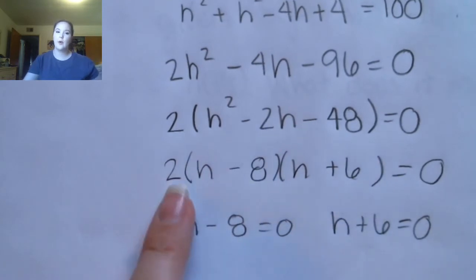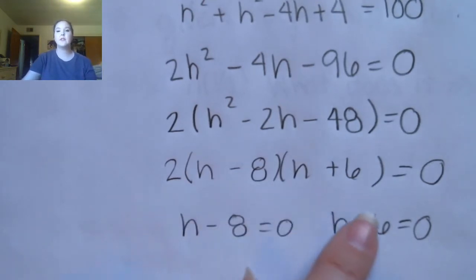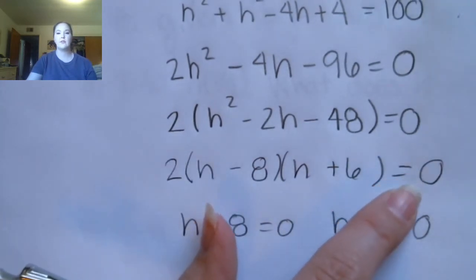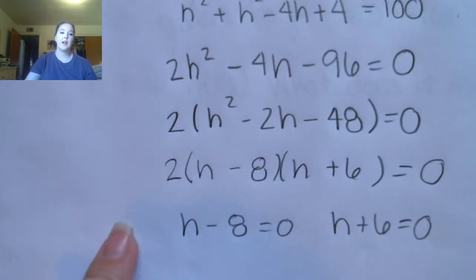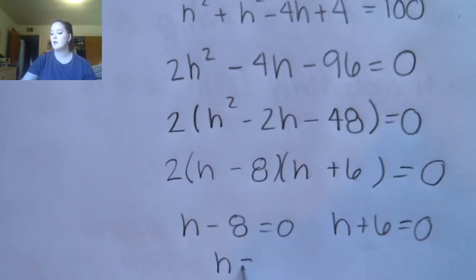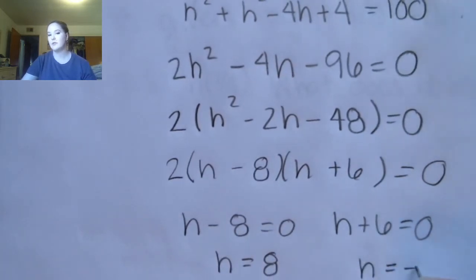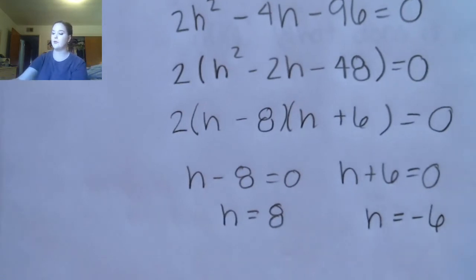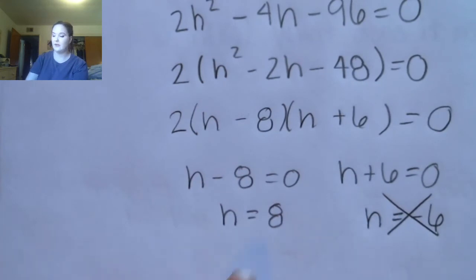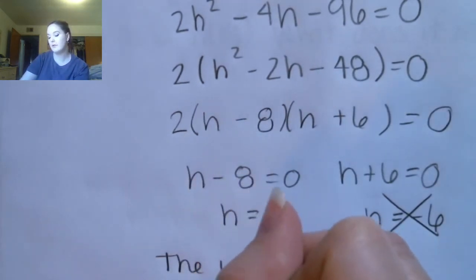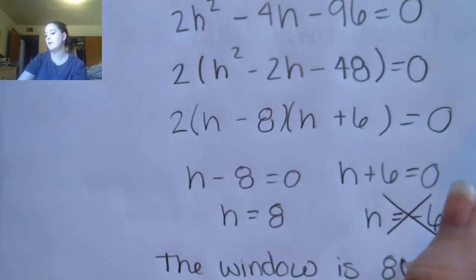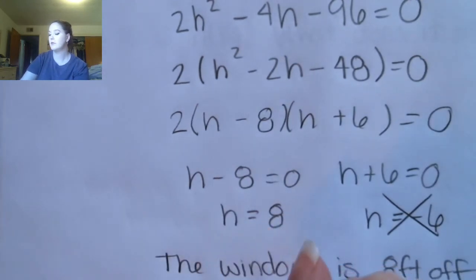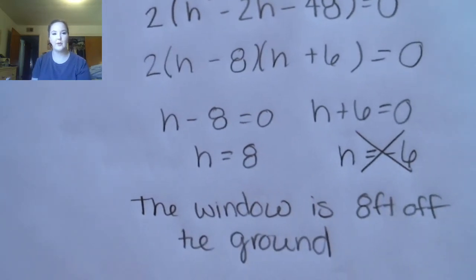I'm asking what multiplies to negative 48 and adds to negative 2 — that should be negative 8 and positive 6. I'm going to set each factor equal to 0. Students often ask why they don't set the factor of 2 equal to 0. You can either divide both sides by 2 (0 divided by 2 is still 0), or note that 2 = 0 is not true and leads to no solution. I get two solutions: h = 8 and h = negative 6. Since we're talking about the height of a window above the ground, negative 6 is not reasonable. So the window is 8 feet off the ground.